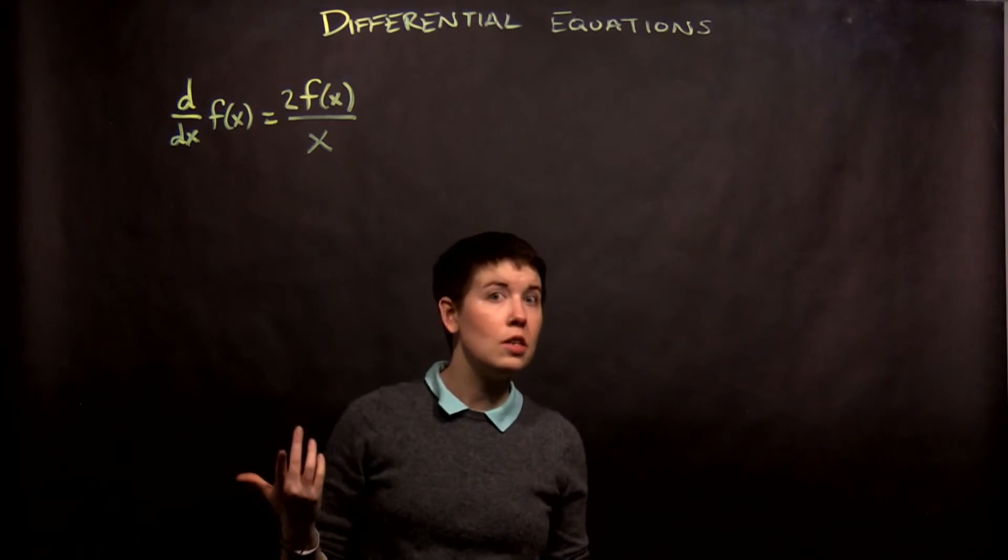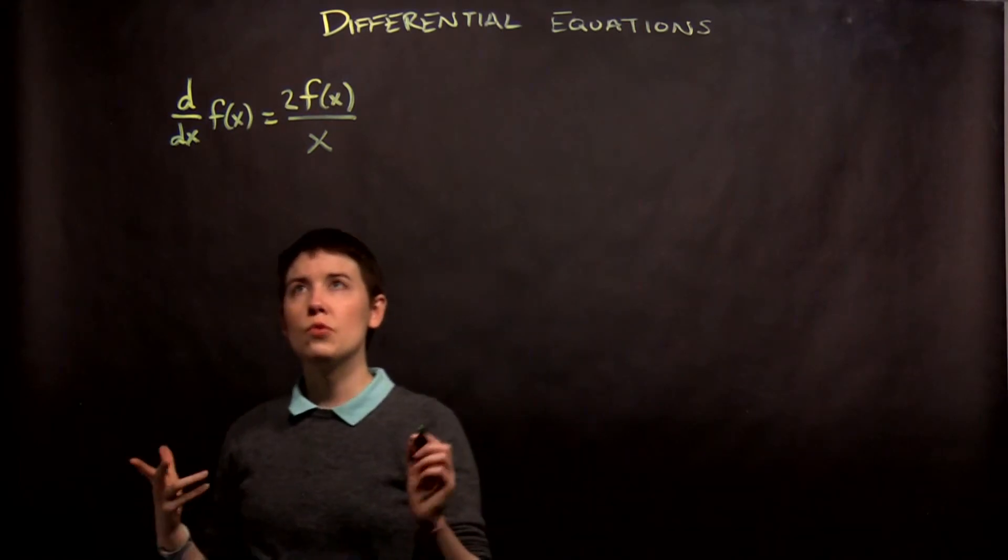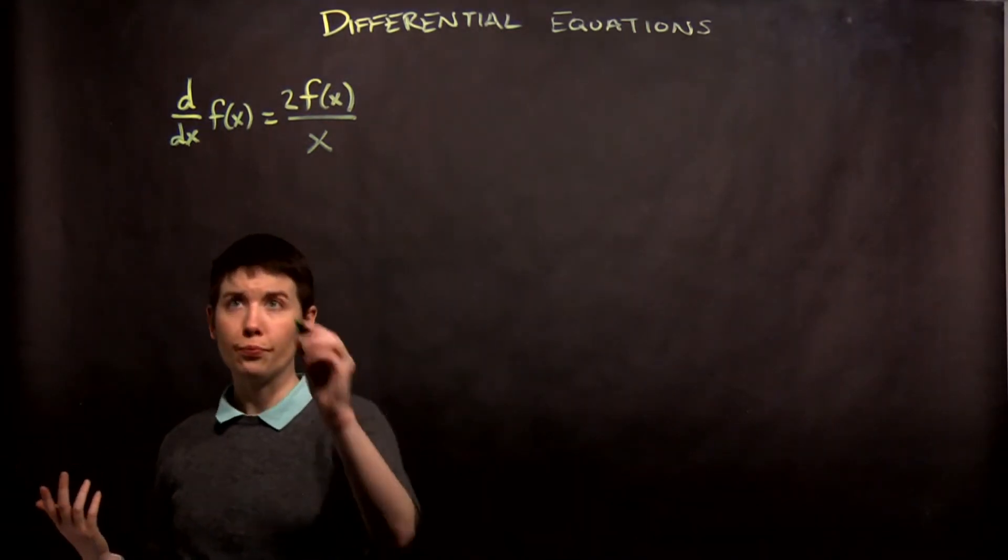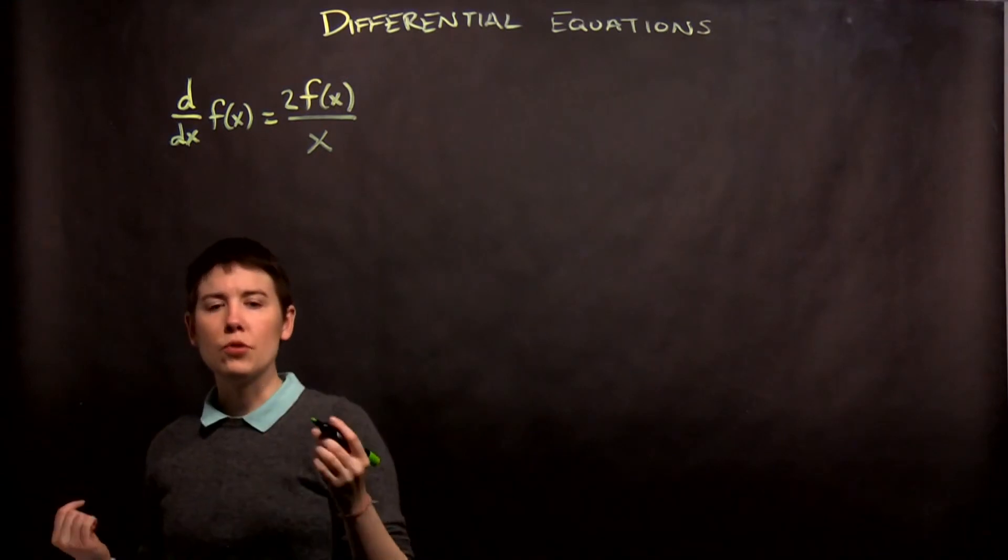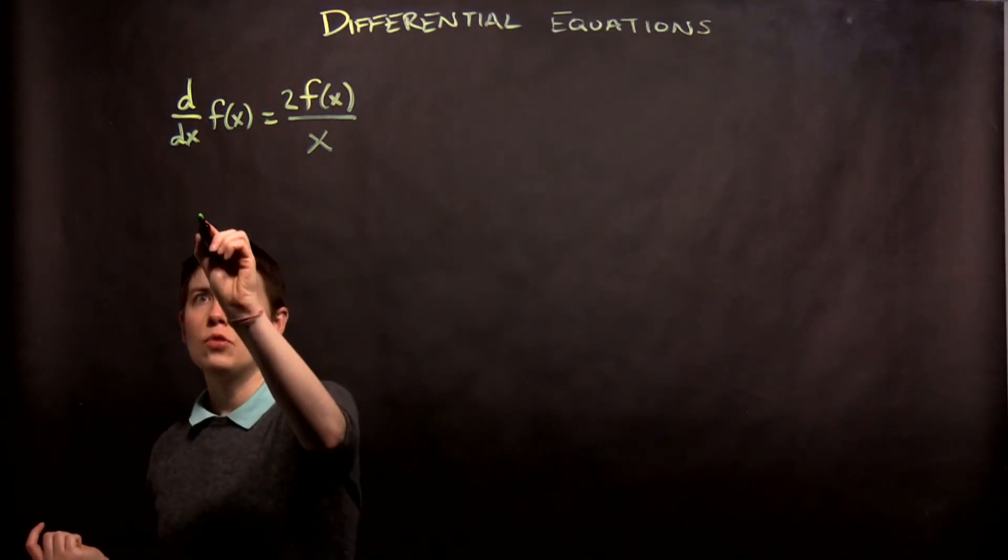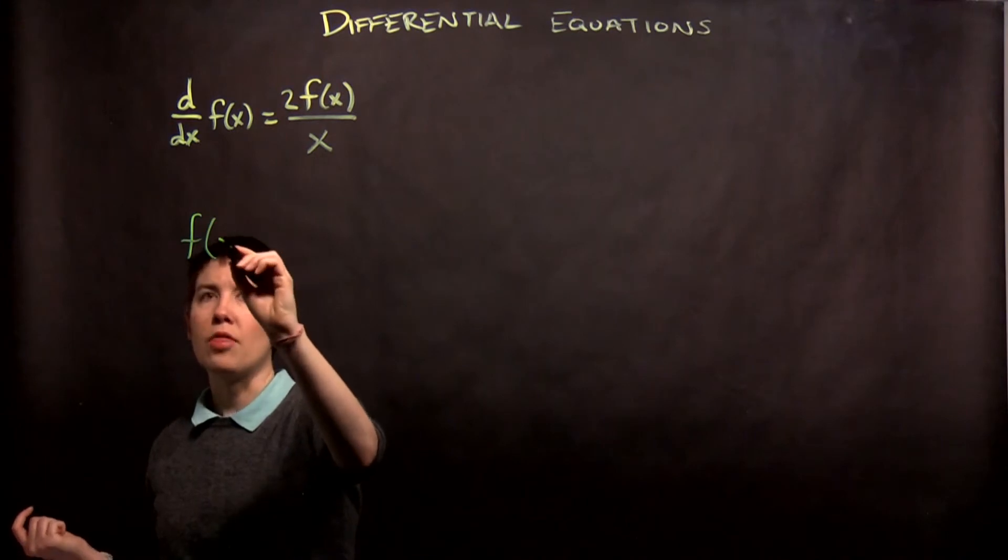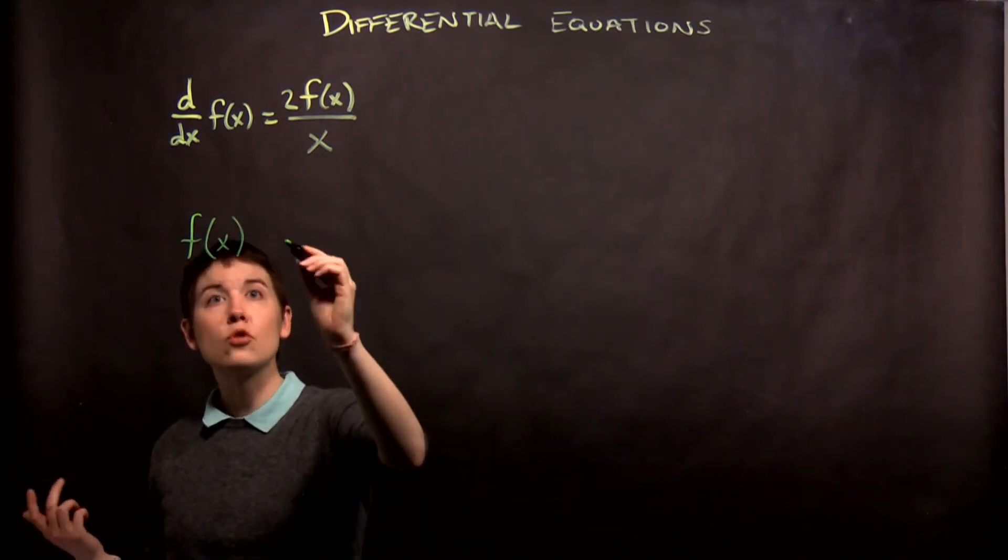Same if you had e to the x, e to the negative ix, things like that. So instead let's guess a polynomial. We can do this in kind of a general way. So let's say I'm really not sure. I think it might be a polynomial. Let's just try it.